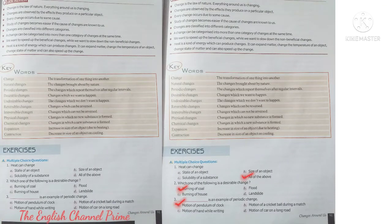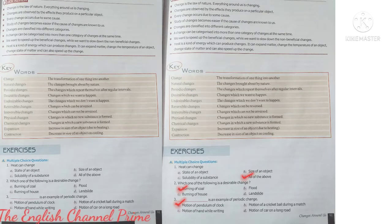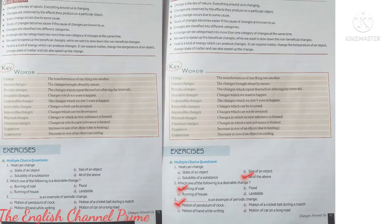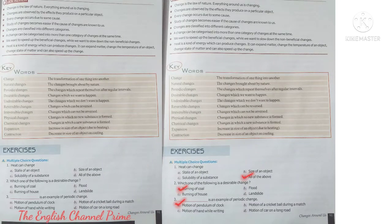Next, question two: Which one of the following is a desirable change? Burning of coal, flood, burning of house, or landslide. Look children, flood, burning of house, and landslide are all harmful. Burning of coal gives us energy, so it is a desirable change. Option A.